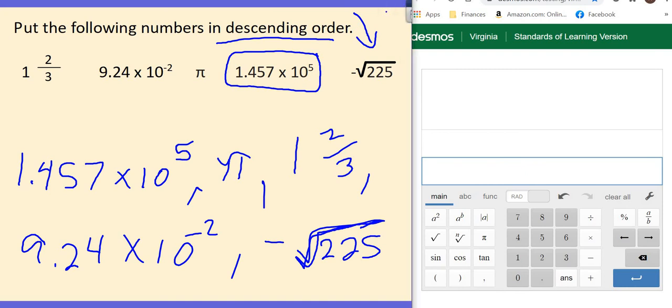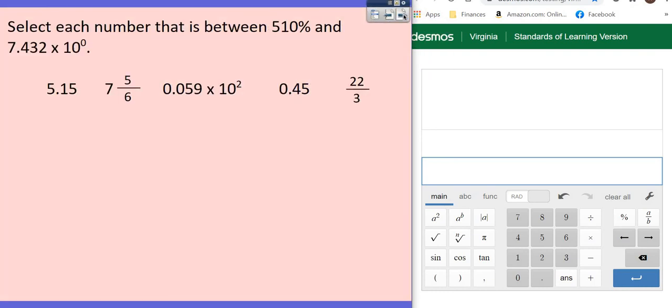Okay, let's try one more. I know I'm going fast. If you need to stop and rewind, do that. Okay, it's going to be worth it for you. All right, this one says select each number between 510% and 7.43 times 10 to the 0. Well, first things first, we've got to make both numbers percents. So let's start with the 7.432 times 10 raised to the 0 power. Don't forget, to make it a percent, you multiply by 100. So that number is now 743.2%. So I know what two numbers I'm trying to be between.